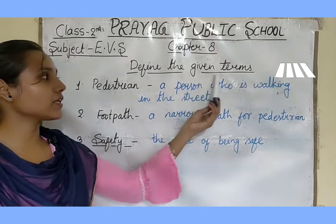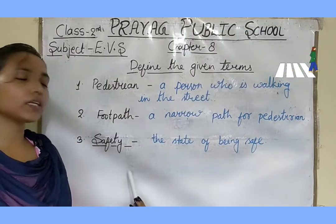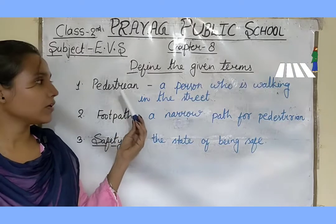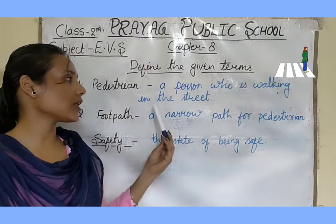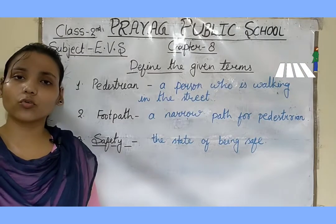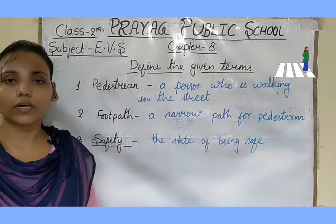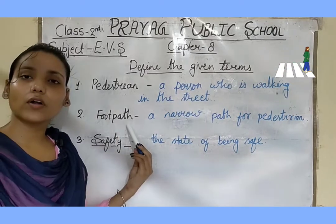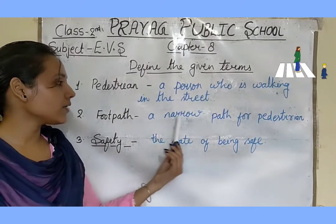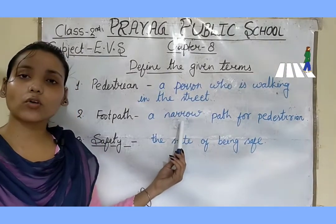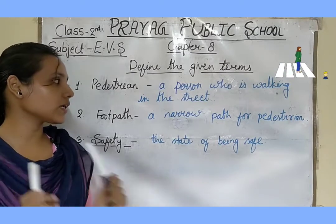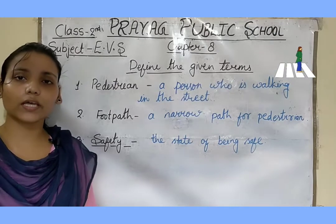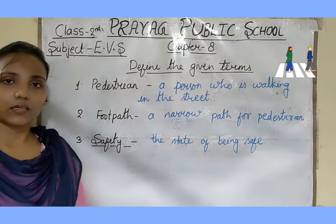Our next exercise is: define the given terms. I have given you only three terms to define. Our first term is pedestrian — a person who is walking in the street or road. Woh vyakti jo street ya road par walk karta ho, kisi vehicle mein na ho, use hum pedestrian kehte hain. Next, what is footpath? A narrow path for pedestrians. Narrow means sankra ya patla, so footpath woh patla raasta hota hai jo pedestrians ke liye bana hota hai.